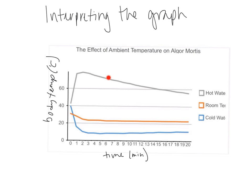If the body is outside in a hot environment, it rises to that ambient temperature, then cools at night and rises again the next day — it follows the environmental trend. Inside, it falls to room temperature and stays constant, which is why the Glaser equation works indoors. In variable outdoor environments — cold or hot — we have to use other factors like insect activity or decay to determine time of death.